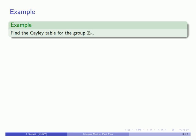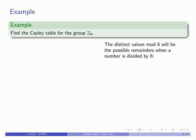For example, suppose we want to find the Cayley table for the group Z_6. We begin by looking at the distinct values mod 6. These are going to be the possible remainders when a number is divided by 6, namely 0, 1, 2, 3, 4, or 5.